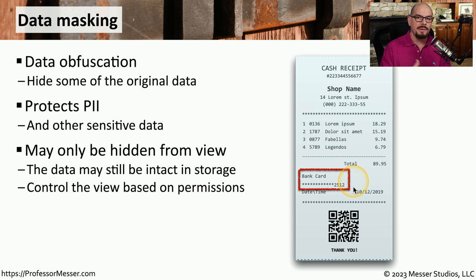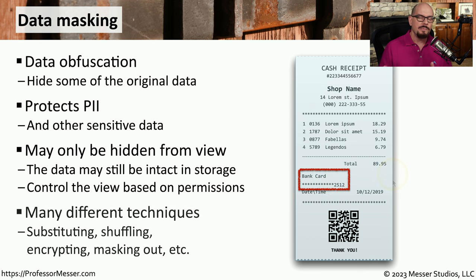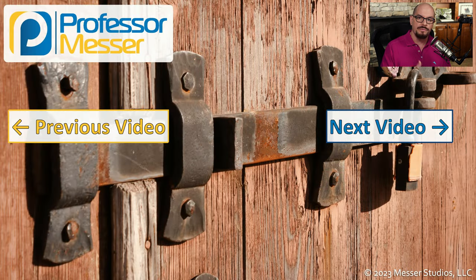This type of data masking might also be used for a customer service representative. So if you call into your credit card company, they may tell you they're looking at the card with the last four digits of 2512. To protect the security of the entire number, it's not uncommon for companies to limit who has access to that information, and the person you're speaking with may only be able to see a portion of your credit card number. There are a number of different ways to mask a number — you don't have to use asterisks. You could simply rearrange the numbers or replace certain numbers with others that you could reverse later on.